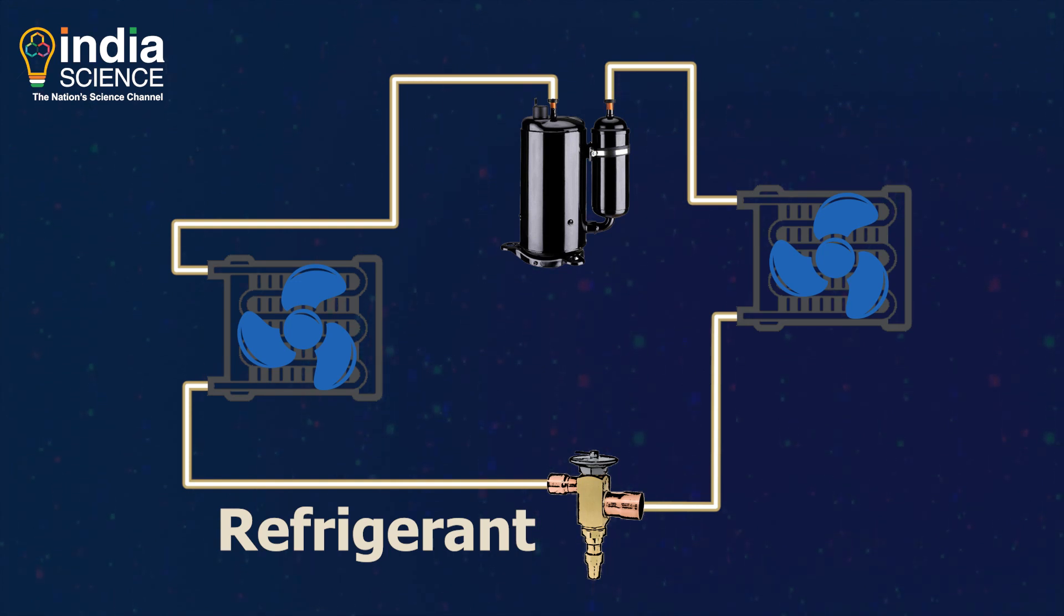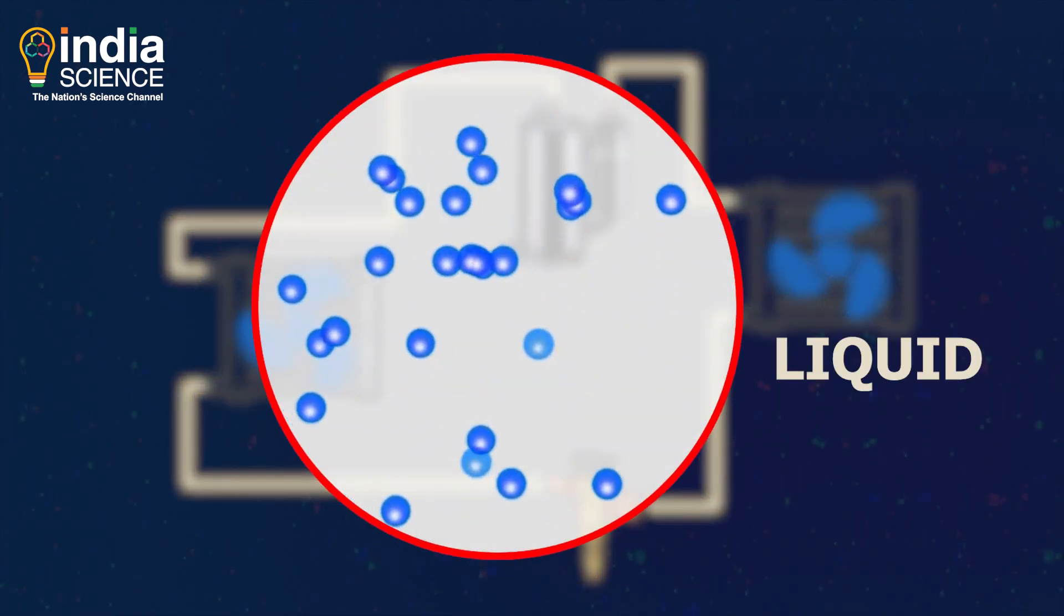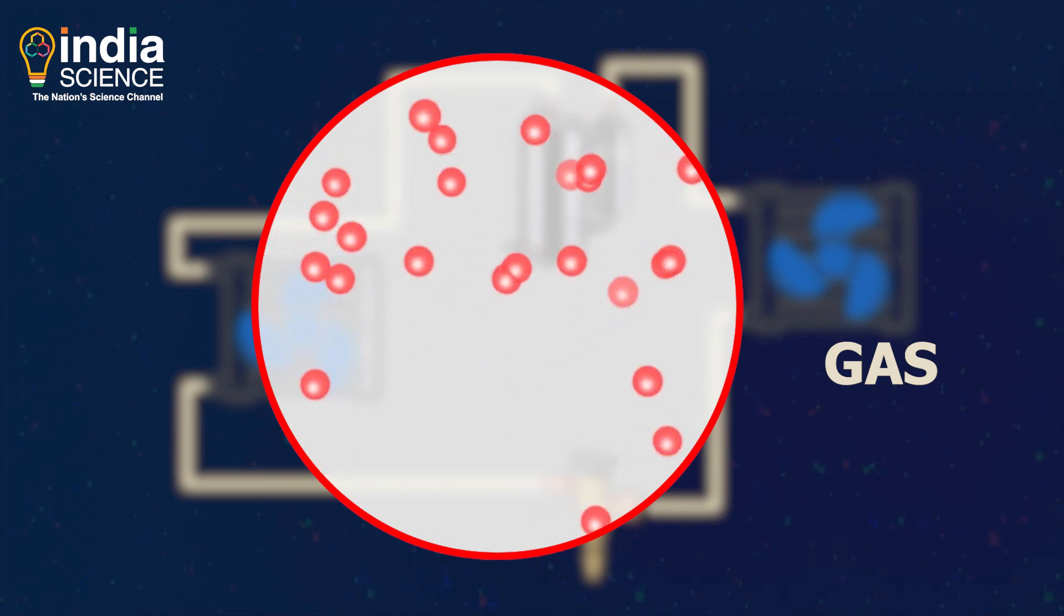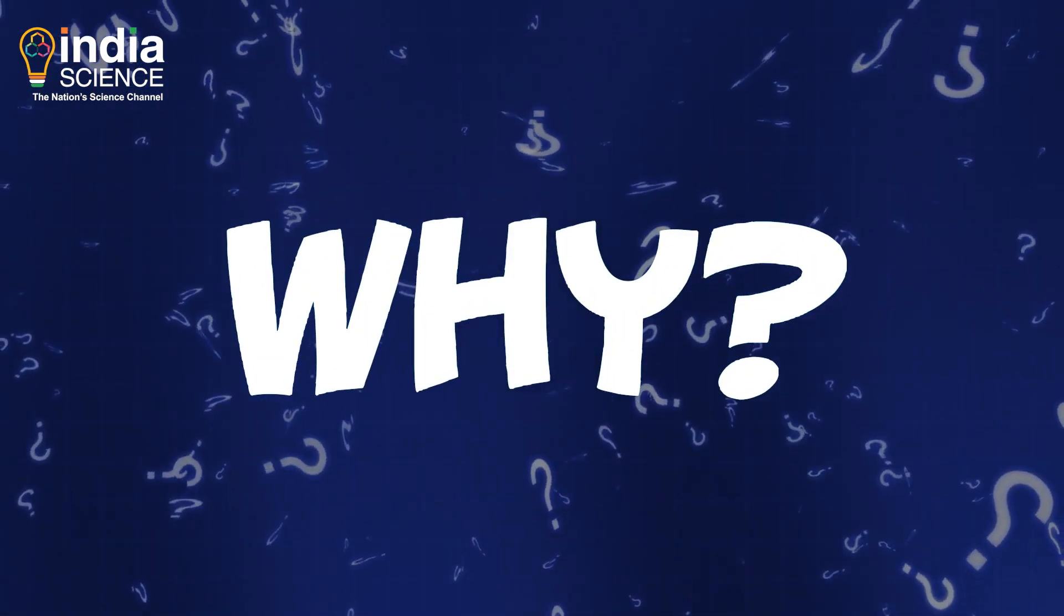In general, we call it the gas. It works as a messenger and flows through pipes and parts of Miss Chill. It changes its state from liquid to gas and gas to liquid continuously. Why? We will talk about it later.